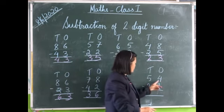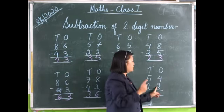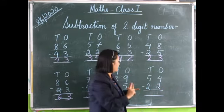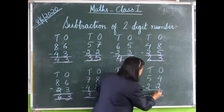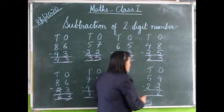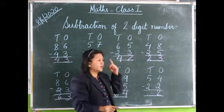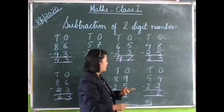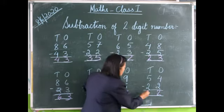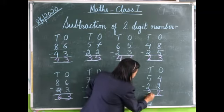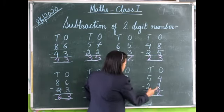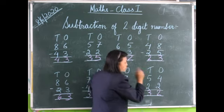Fifty-four minus twenty-two. Four on the head, two in our fingers. We count backwards: four, three, two. Now five minus two. Five on the head, two in our fingers. We count backwards: five, four, three. Therefore, 54 minus 22 is equal to 32.